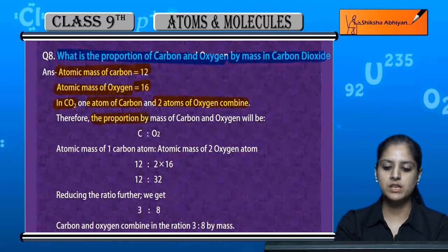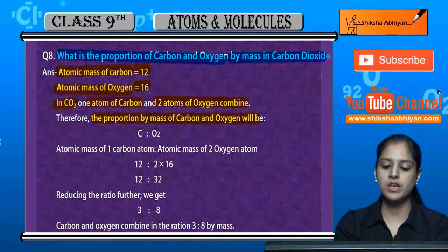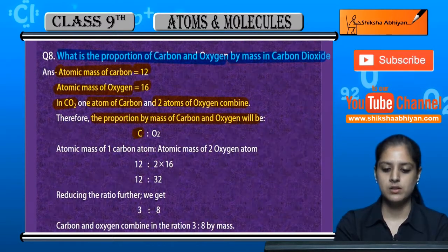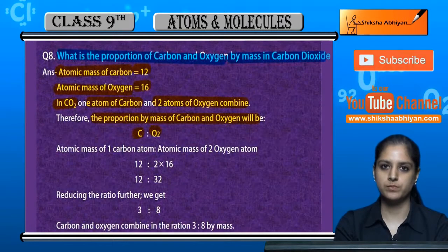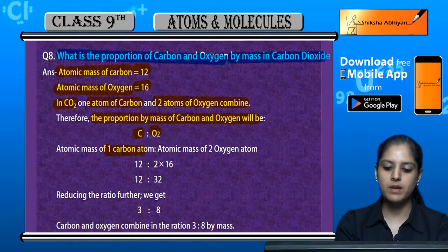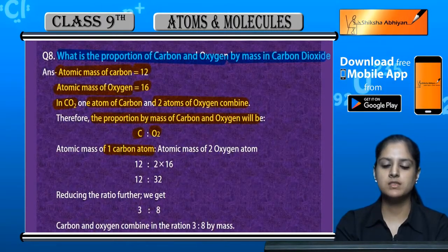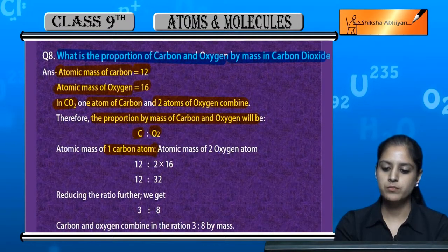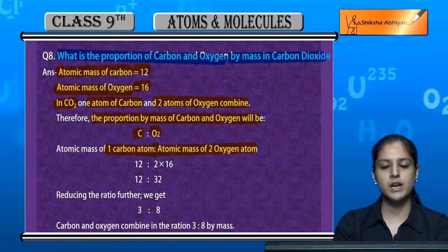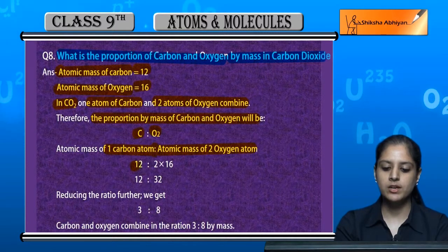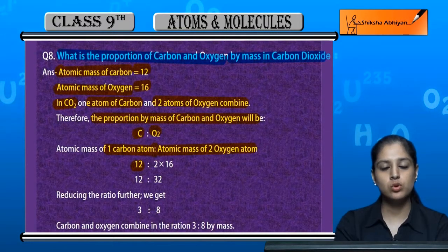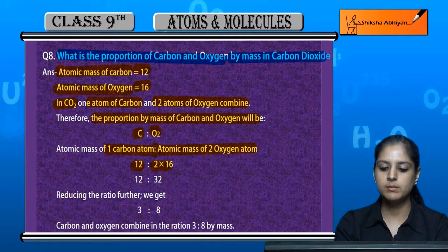So, if we look at the proportion of carbon and oxygen, how will it be? 1 carbon is in ratio to 2 oxygen. The atomic mass of 1 carbon atom is 12, and 2 oxygen atoms are 2 multiplied by 16.